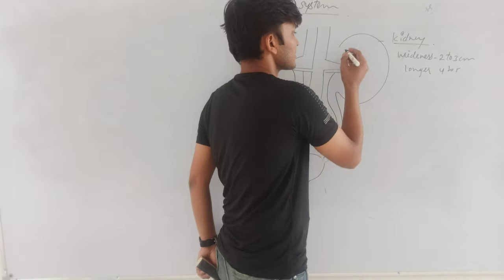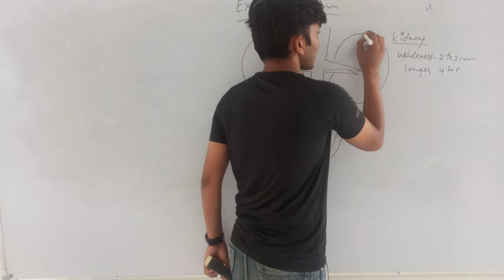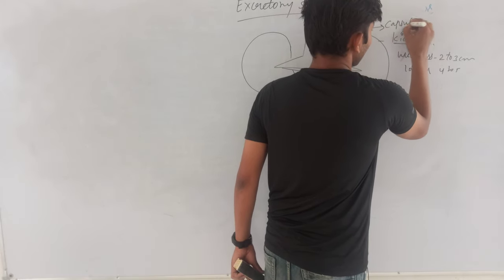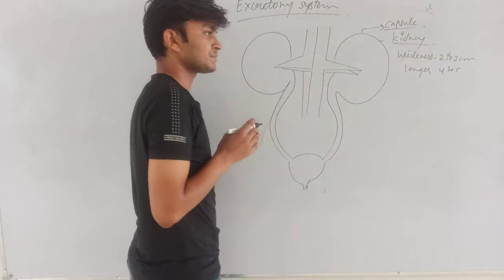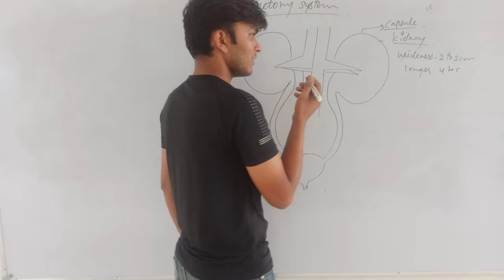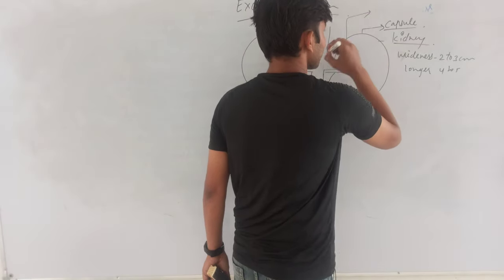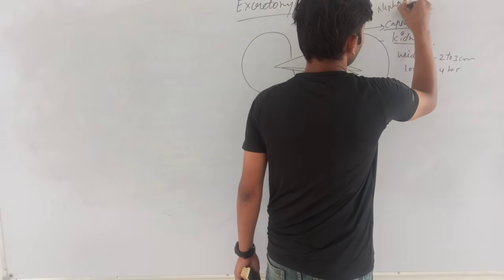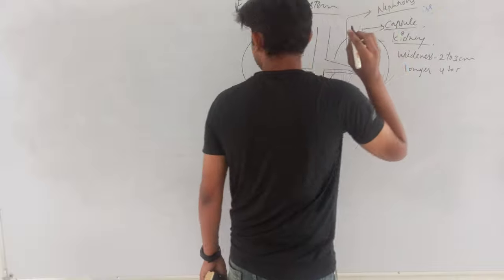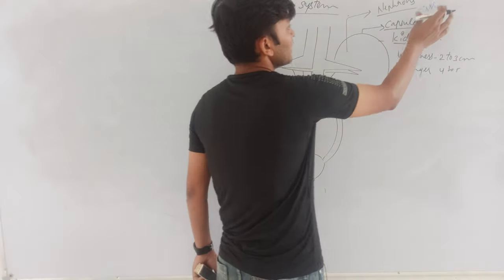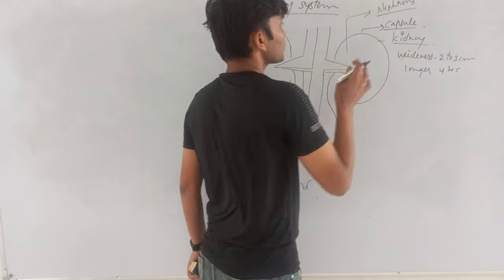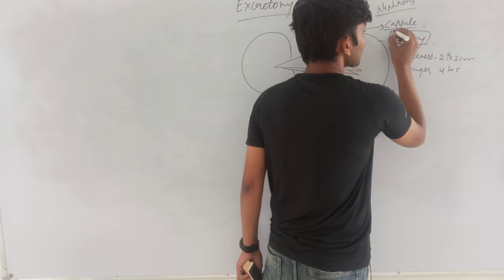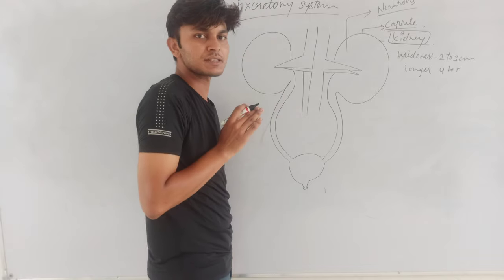Kidneys are surrounded on all sides by a structure known as the capsule. Inside the kidney, many tube-like structures are found. These tube-like structures are known as nephrons. Nephrons are also known as the structural and functional unit of the kidney.